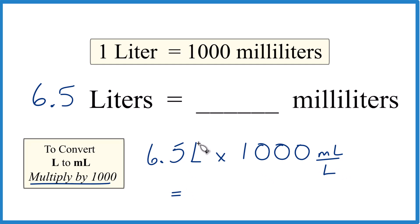Now when we do the math, we have liters on top and the bottom, they cancel out, we're left with milliliters. That's what we're looking for. 6.5 times 1,000 is 6,500, and again, our units, milliliters.